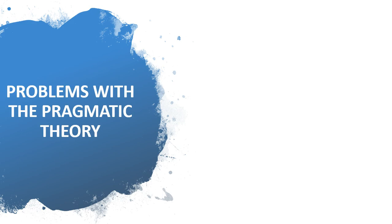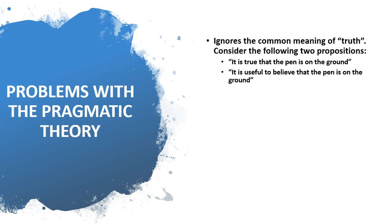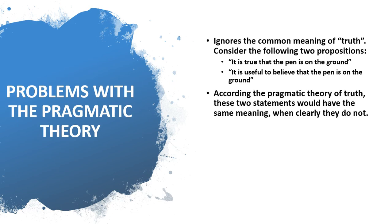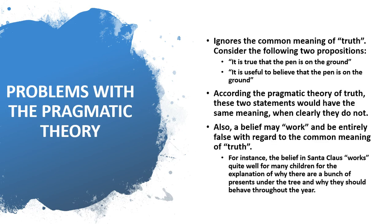Of course we have to look at the problems with the pragmatic theory. The pragmatic theory ignores the common meaning of truth. Consider: 'it is true that the pen is on the ground' versus 'it is useful to believe that the pen is on the ground' — according to the pragmatic theory these two statements would have the same meaning, when clearly they do not. Also, a belief may work and yet be entirely false with regard to the common meaning of truth. For instance, the belief in Santa Claus works quite well for many children as an explanation for why there are presents under the tree and why they should behave throughout the year.